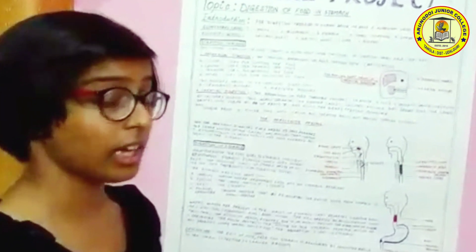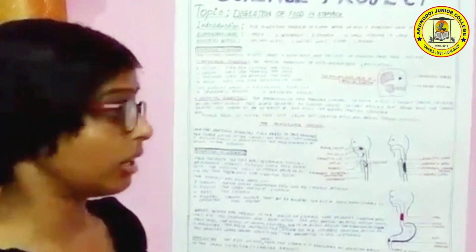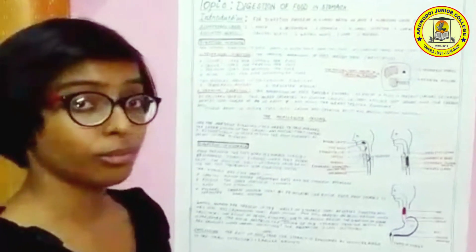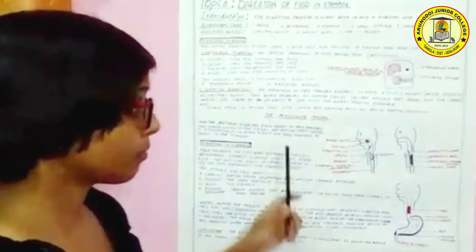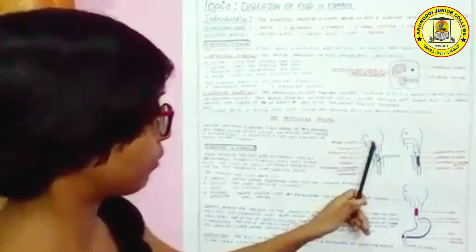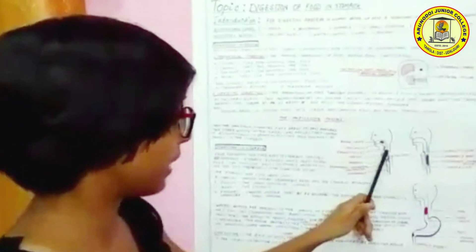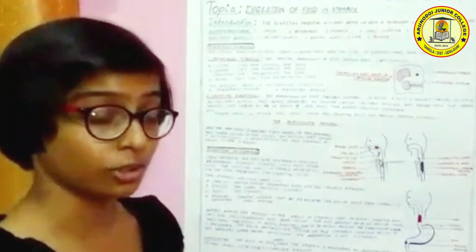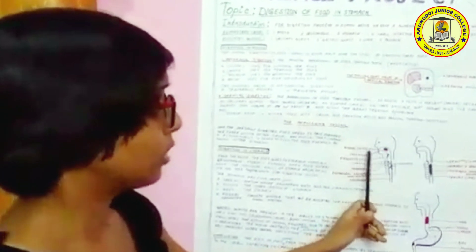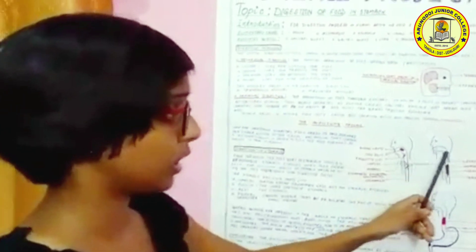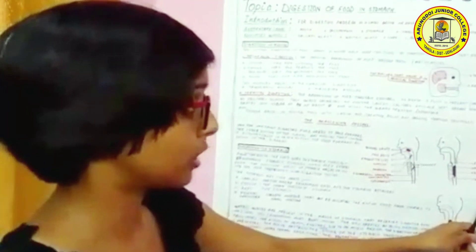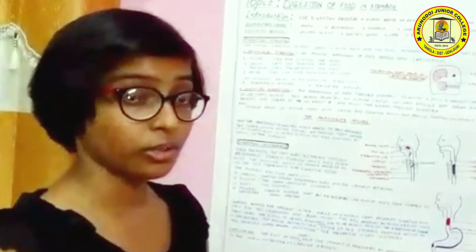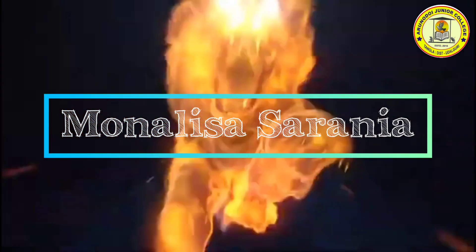The salivary amylase enzyme breaks down carbohydrates into sugars at a pH of about 7 and kills germs through lysozyme. The tongue helps mix the food with saliva, creating a bolus for passing through the oesophagus to the stomach. The inner lining of the alimentary canal has muscles that contract rhythmically to push food forward — a process called peristalsis. When the food bolus enters the oesophagus from the buccal cavity, the epiglottis closes and the oesophagus sphincter relaxes, allowing food to enter from the oesophagus into the stomach.